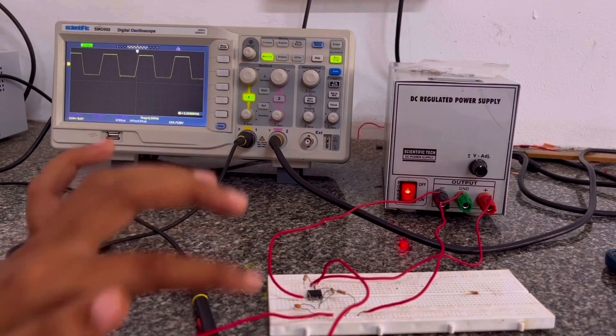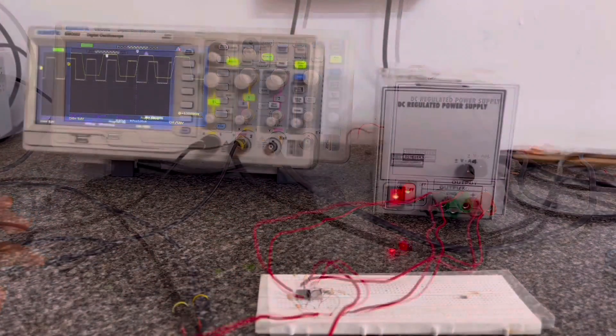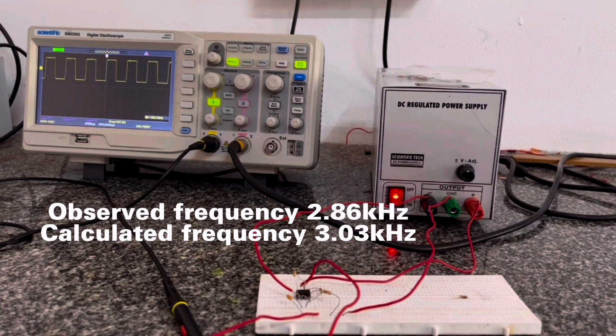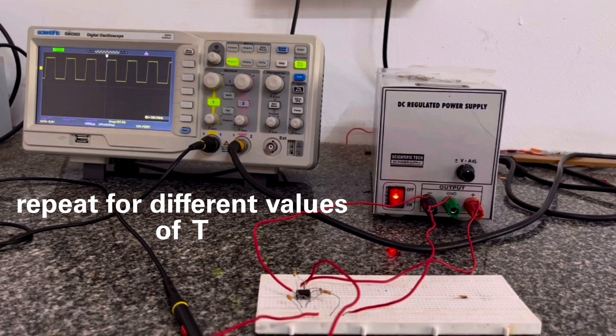DSO shows the output frequency is 2.86 kHz. The output time period is 0.3 milliseconds. The frequency is 2.86 kHz. The calculated value is 3.03. The difference between them will continue to repeat this time period.